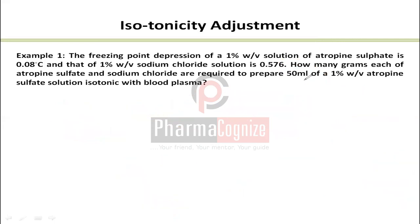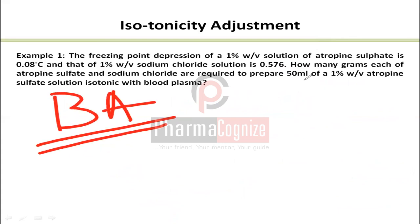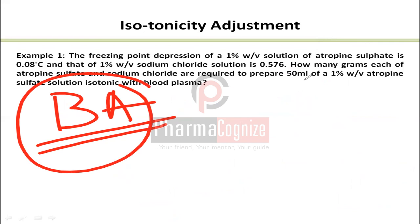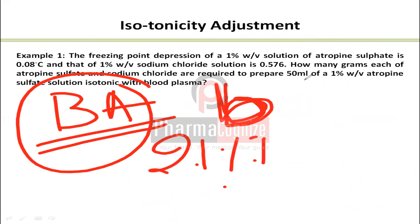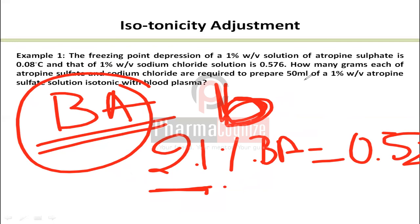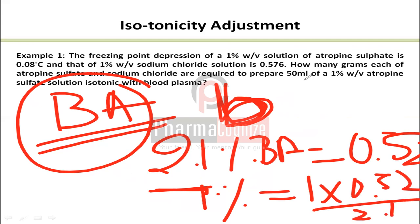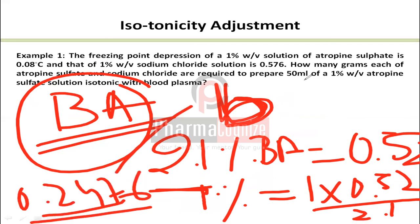One more thing: boric acid can also be used as an adjusting agent instead of NaCl. We know that 2.1% boric acid is isotonic with blood, so its freezing point depression is 0.52°C. The B value for boric acid is: 1 × 0.52 ÷ 2.1 = 0.2476. So when adjusting with boric acid, B = 0.2476.